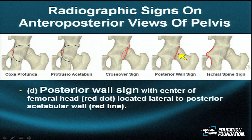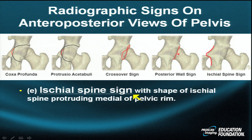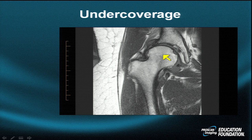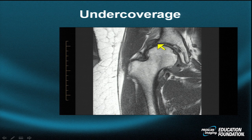In the posterior wall sign, the center of the femoral head (small red dot) is located lateral to the posterior acetabular wall (red line). For the ischial spine sign, the ischial spine protrudes medially to the pelvic rim. As an example of under-coverage: if we draw a vertical line and another along the edge of the bony acetabulum, that center edge angle would be well under 20 degrees — indicating insufficient coverage.